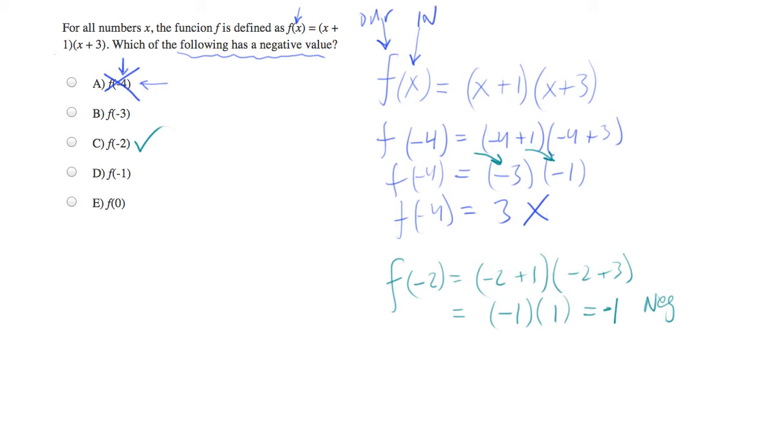Let's do the others just in case you're interested in seeing them. f of negative 3 will be equal to negative 3 plus 1 times negative 3 plus 3. That's going to have a negative 2 times 0, which will be equal to 0. So let's go ahead and try f of negative 1. Negative 1 plus 1 times negative 1 plus 3. That will be 0 times 2, which is equal to 0 again. So that one's out.